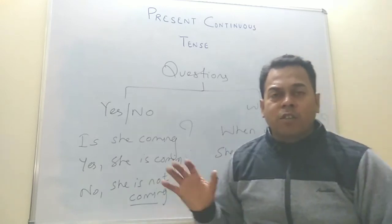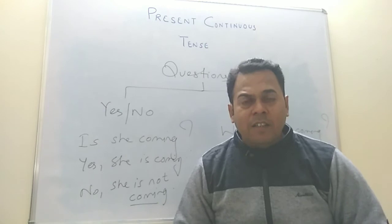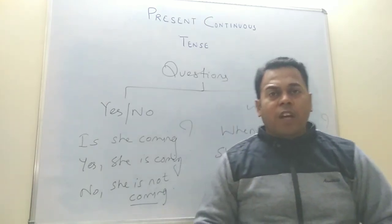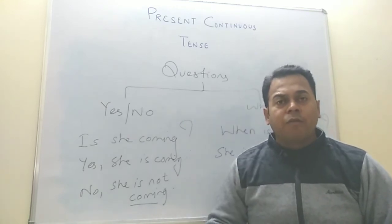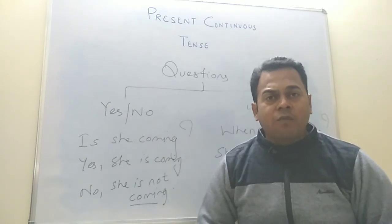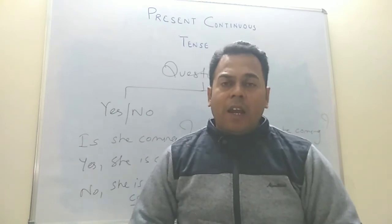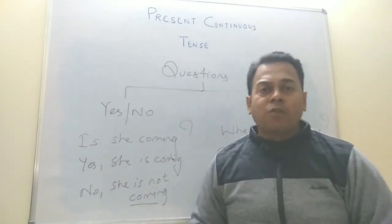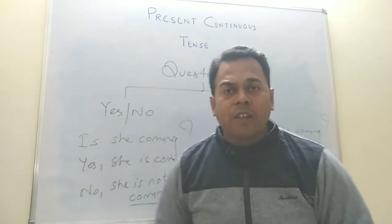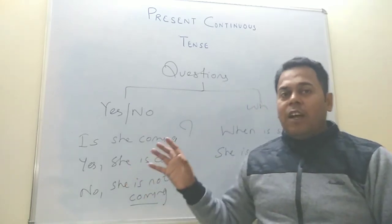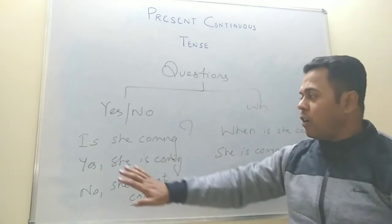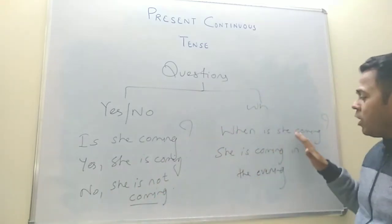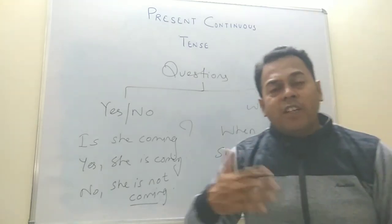Let me revise once more. Usage: we use present continuous tense for an activity in progress at present, an activity about to happen in a couple of minutes, and an activity happening these days. Rules: I am, you are, he is, she is, it is, they are, we are — all pronouns take verb with -ing. Always remember the thumb rule: use verb with -ing in continuous tense. Questions: 'Is she coming?' — 'Yes, she is coming' / 'No, she is not coming.' 'When is she coming?' — 'She is coming in the evening.' 'Where is she coming?' — 'She is coming in the cab.'